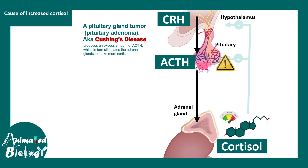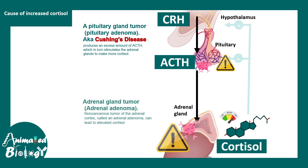Apart from that, there can be an adrenal gland tumor — an adrenal adenoma — which is a functional tumor that produces a lot of cortisol. There can also be genetic and familial influences leading to familial Cushing's syndrome.